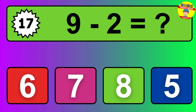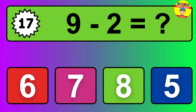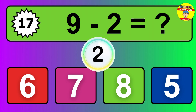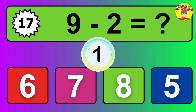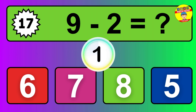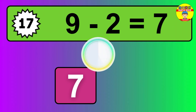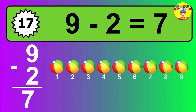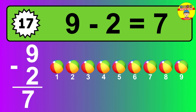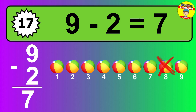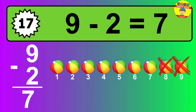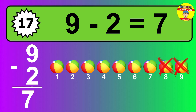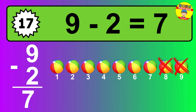Question 17. 9 minus 2 equals what? The answer is 9 minus 2 is 7. Let's count it: 1, 2, 3, 4, 5, 6, 7.